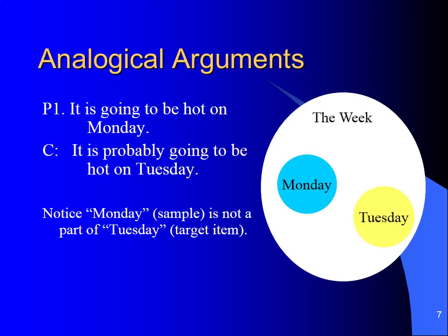Let's see how that's different in an analogical argument. In this argument, I have the same premise: it's going to be hot on Monday. My sample is still Monday, and my property in question is still that it's going to be hot. However, my conclusion is a little different this time — therefore, it's probably going to be hot on Tuesday. Now I have a new target: Tuesday. To determine that this is an analogical argument, I ask myself whether the sample and the target are distinct items. Is Monday a distinct day from Tuesday? Sure — they're totally different days. Therefore, Monday, the sample, is not a subset of Tuesday. My analogs, or terms of the comparison, are distinct, so I know I'm dealing with an analogical argument.